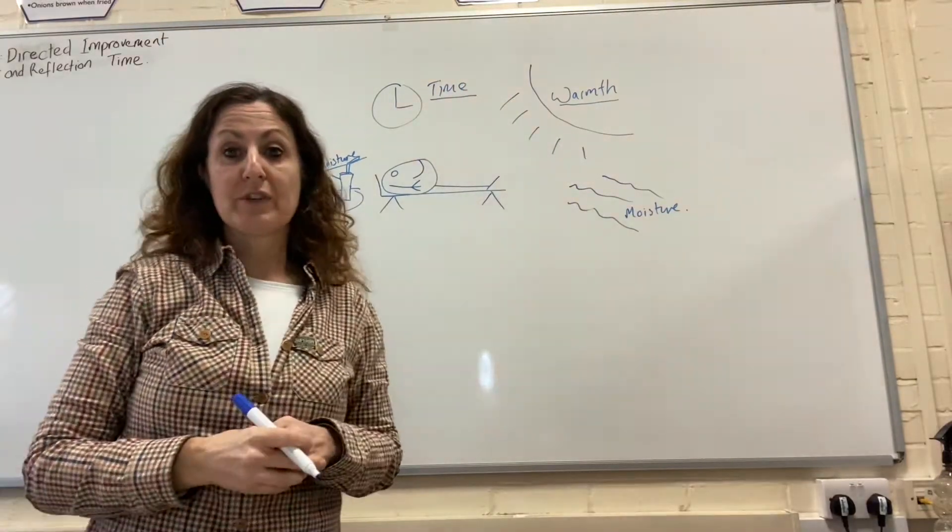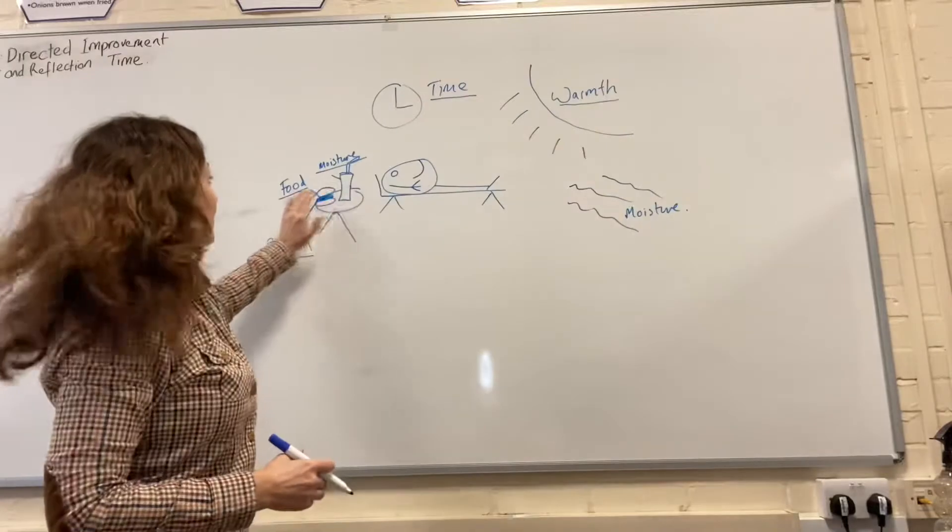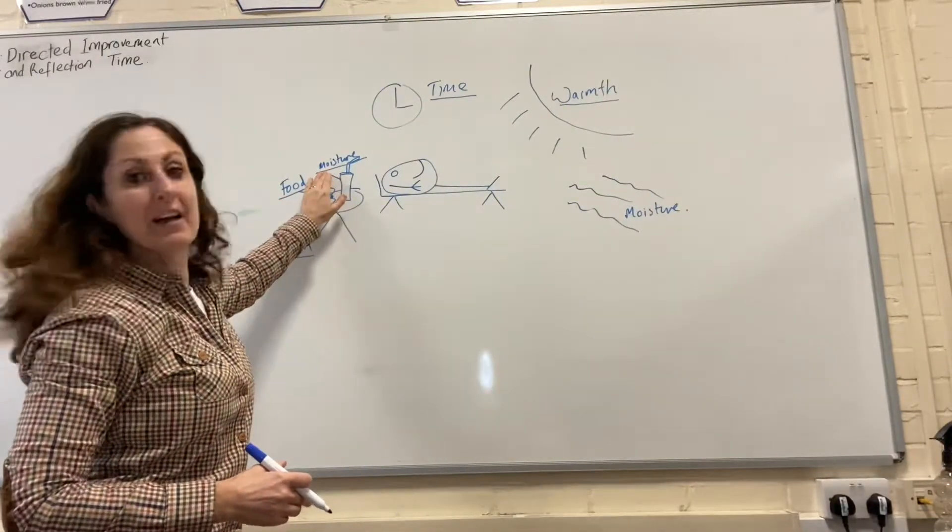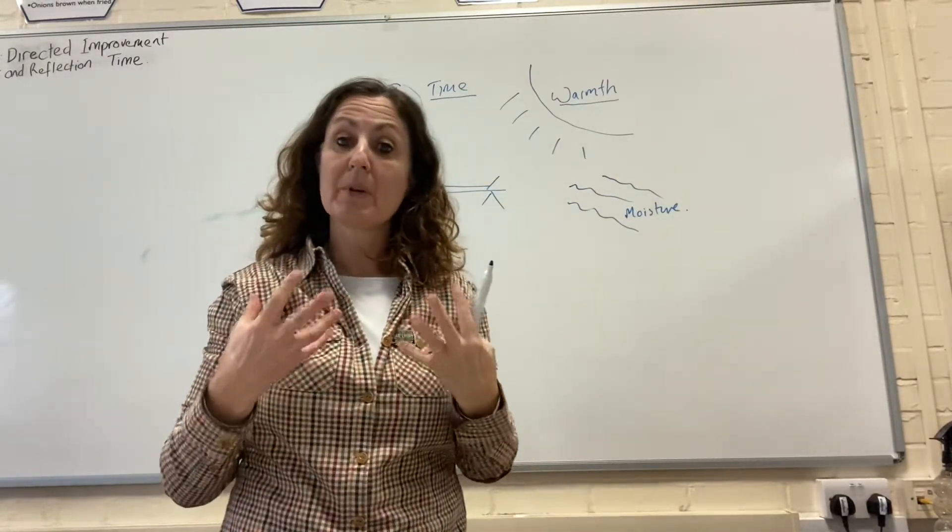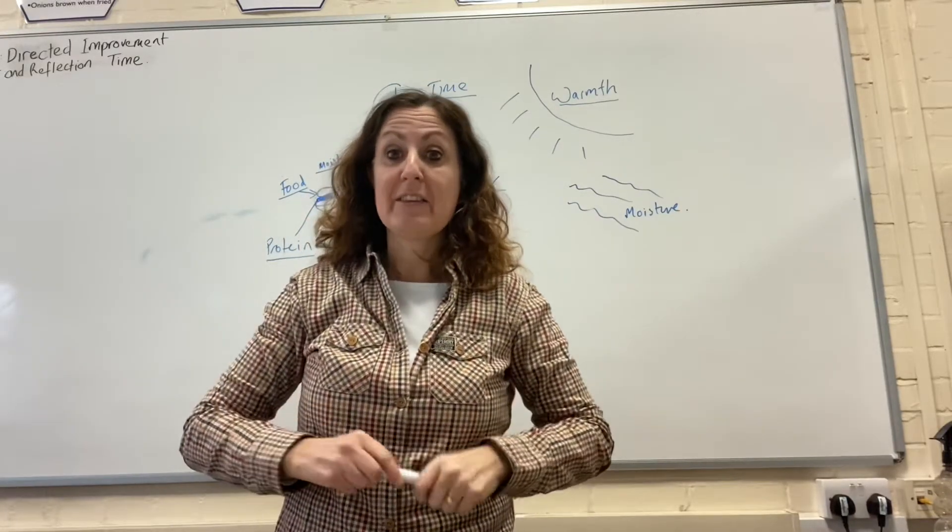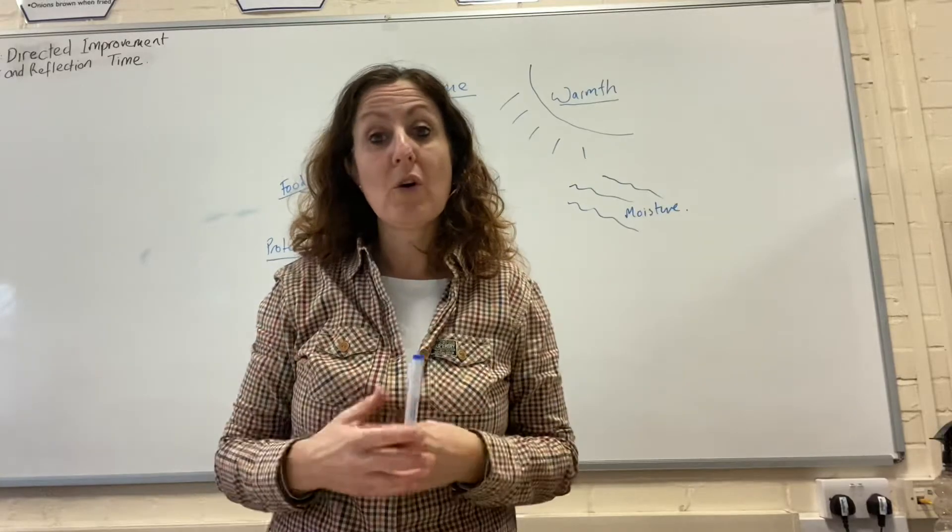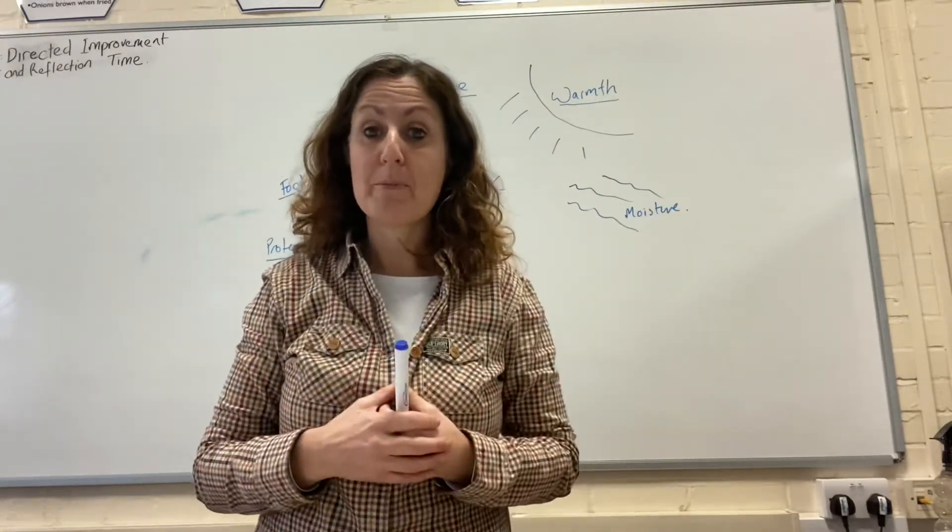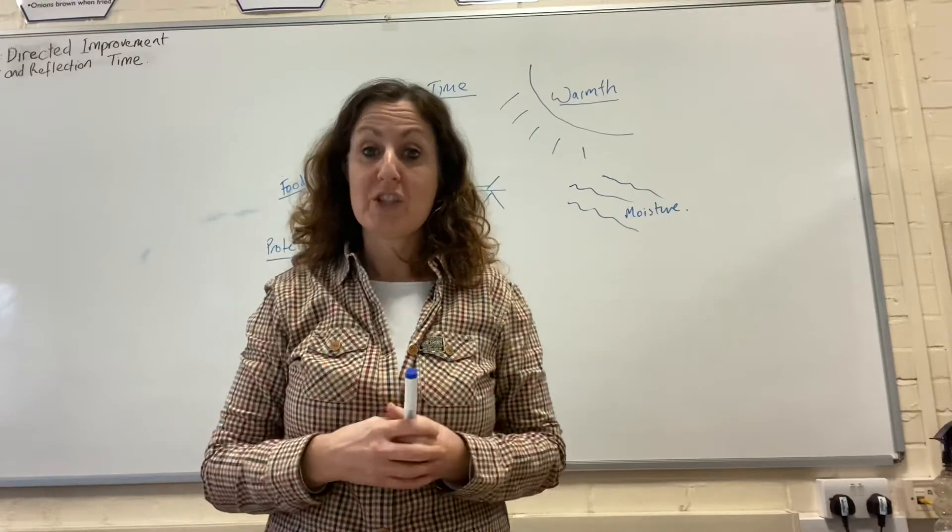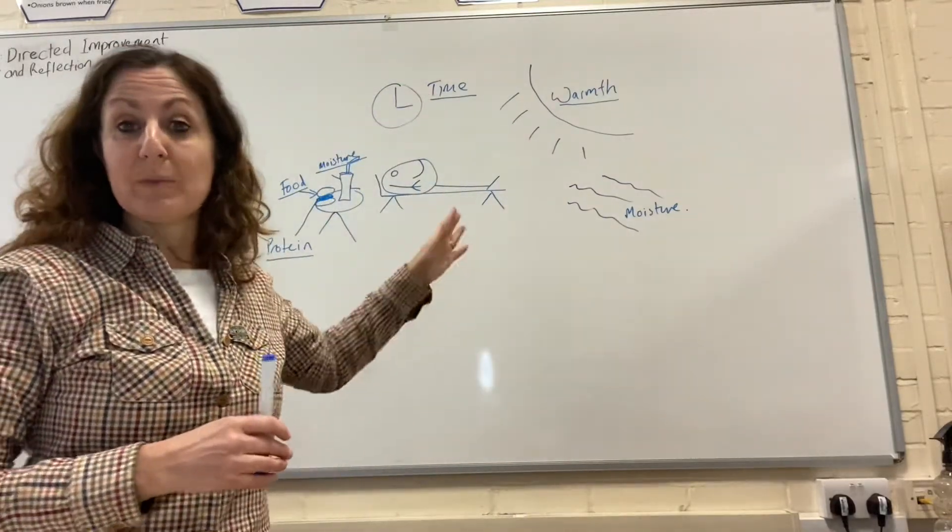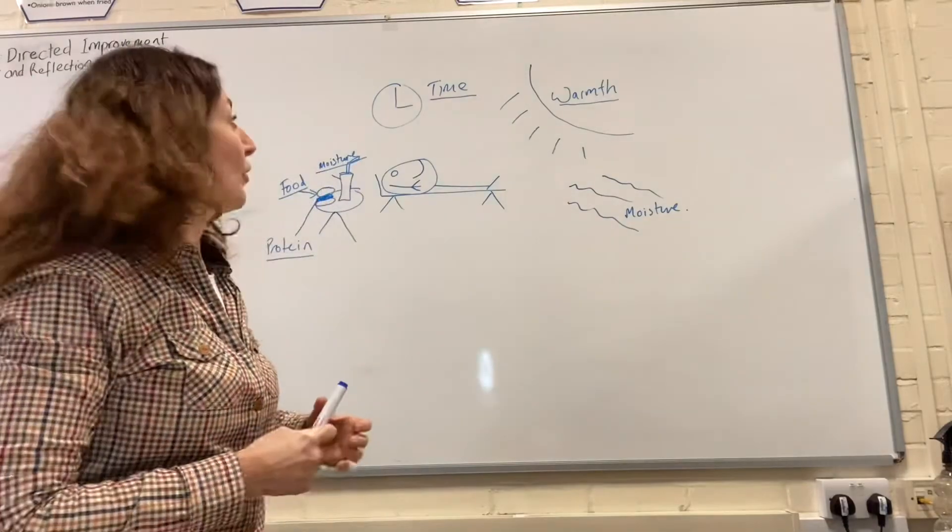So the four conditions for growth for Bobby bacteria are: warmth, food, moisture, and time. These are the four main conditions bacteria need to grow. Some bacteria can survive with air, some without - they're aerobic or anaerobic depending on the type. Some bacteria are also affected by pH balance. There are other conditions to consider, but the main ones you need to concentrate on are the four: time, warmth, food, and moisture.